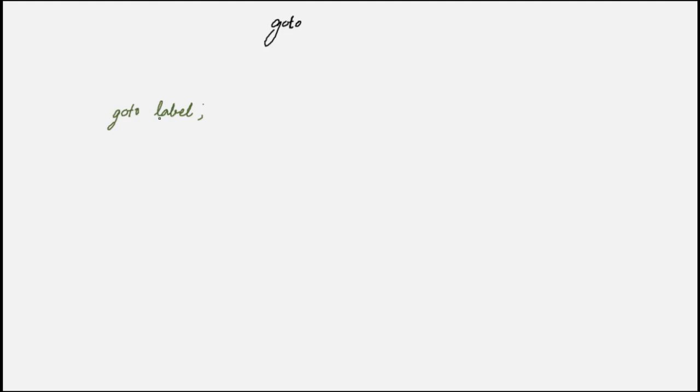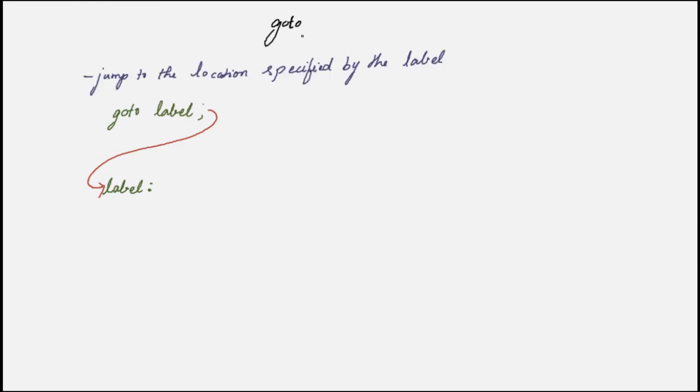Goto is also a keyword. As the name indicates, it instructs the computer to go to some other location in the program. We use a label to tell the computer where to go. A label is not a keyword — it is just a word we choose. We give that same label at some other location in the program. Whenever goto is executed, the computer searches for the label and jumps to that location and continues from there.